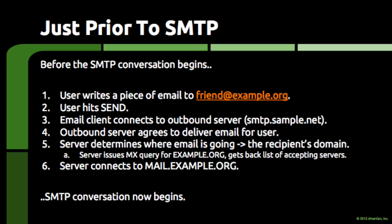Before diving into the guts of the SMTP conversation, it's important to note that a lot happens before SMTP comes into play. First, a piece of email is composed by a person or a piece of software that's churning out email. The person or the software then hits send, which causes the email client to connect to an outbound email server. Those credentials — the server, username, and password — are used when the email client connects to the outbound server, and is how the outbound server knows that it's okay to deliver email on behalf of the client.